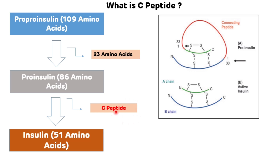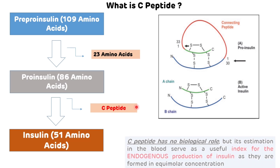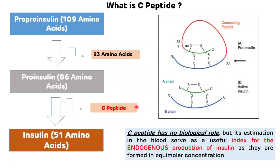This C-peptide does not have any biological role, but its estimation in the blood serves as a useful index for the endogenous production of insulin, as they are formed in equimolar concentration. The C-peptide is cleared from the circulation slowly as compared to insulin.